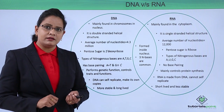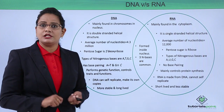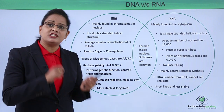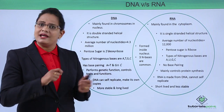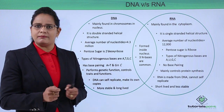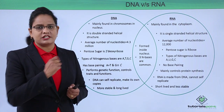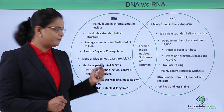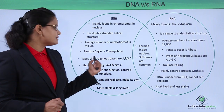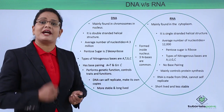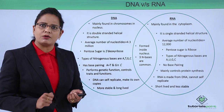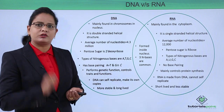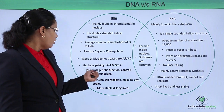Since RNA is single stranded, it does not have base pairing. When RNA is formed from DNA, some complementary pairing occurs, but otherwise it does not have base pairing. For DNA, the base pairing is: adenine pairs with thymine by two hydrogen bonds, and guanine pairs with cytosine by three hydrogen bonds.